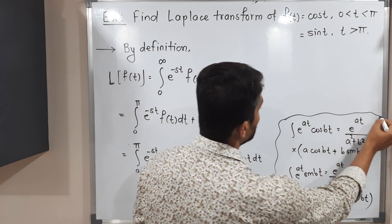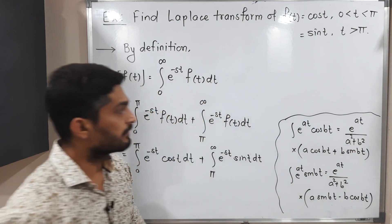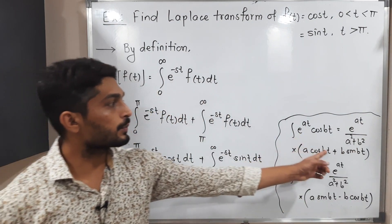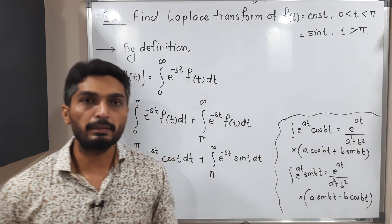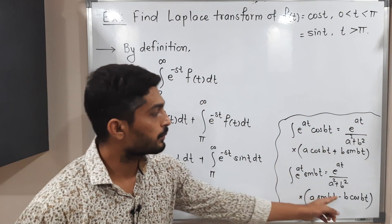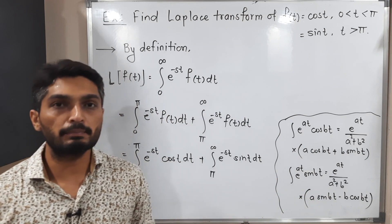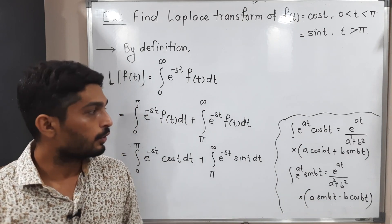You can easily see that when we have cos, we have a plus sign between the terms, and when we have sin, we have a minus sign between them.